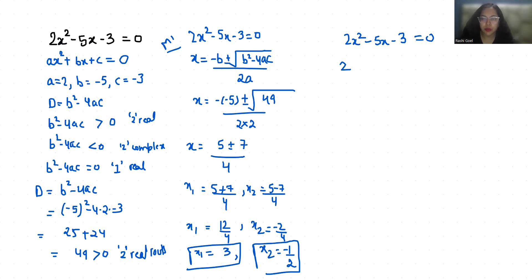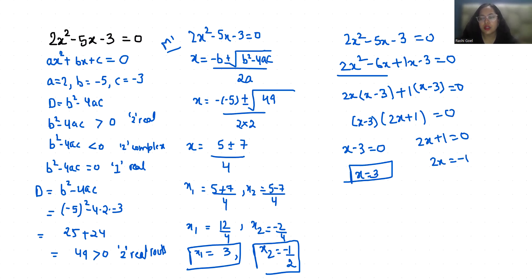2x² - 6x + x - 3 = 0. From the first two terms, if 2x is common: 2x(x - 3). If +1 is common: +(x - 3) = 0. Now x - 3 is common, so (2x + 1)(x - 3) = 0. Thus x - 3 = 0, x = 3. And 2x + 1 = 0, 2x = -1, x = -1/2.